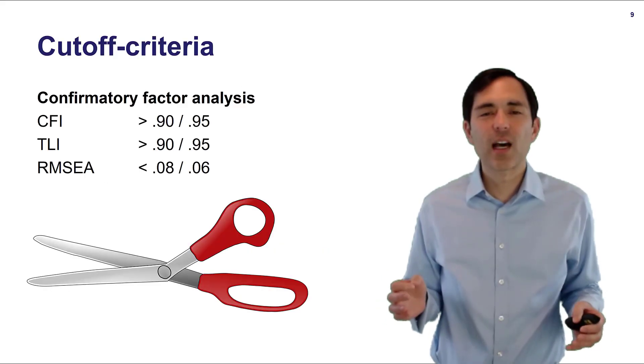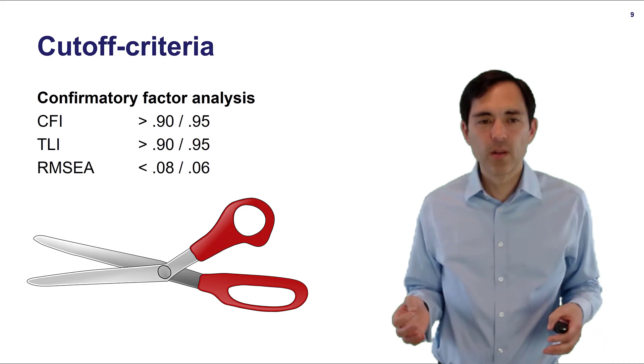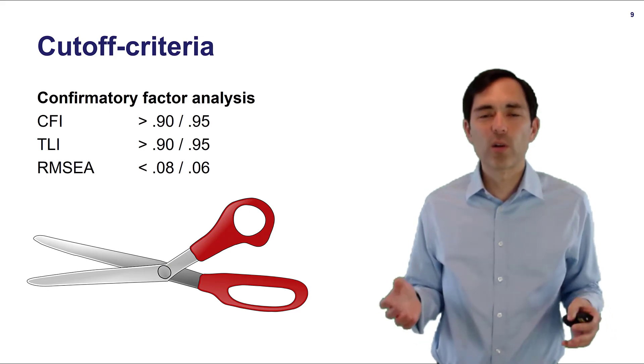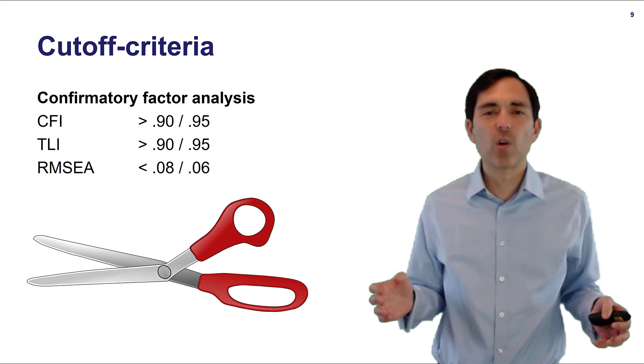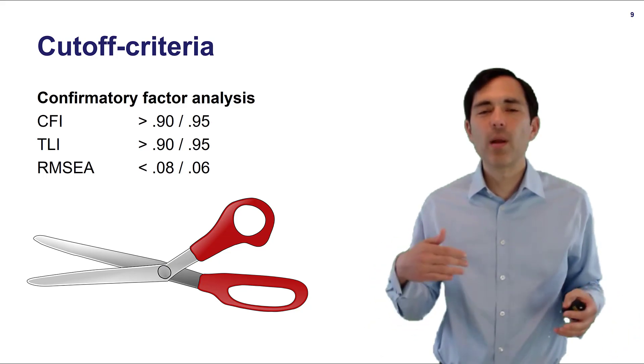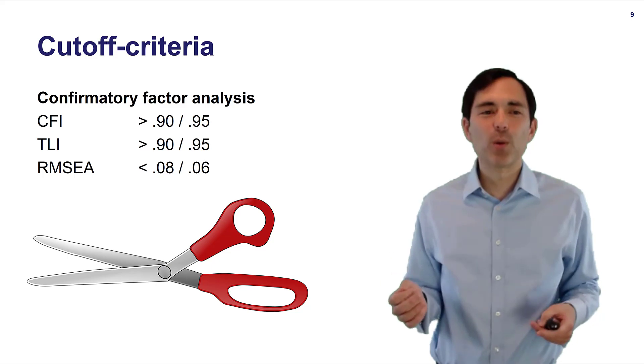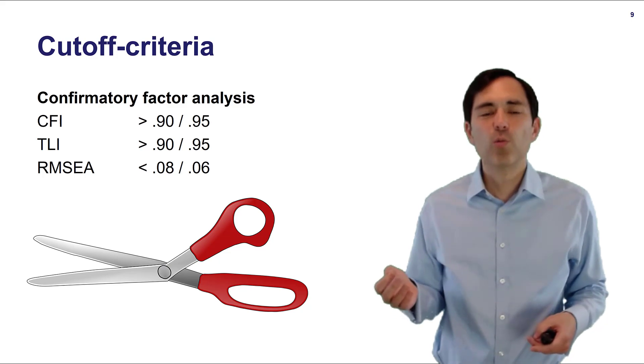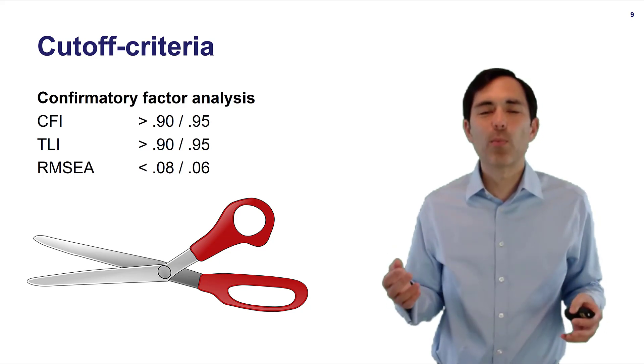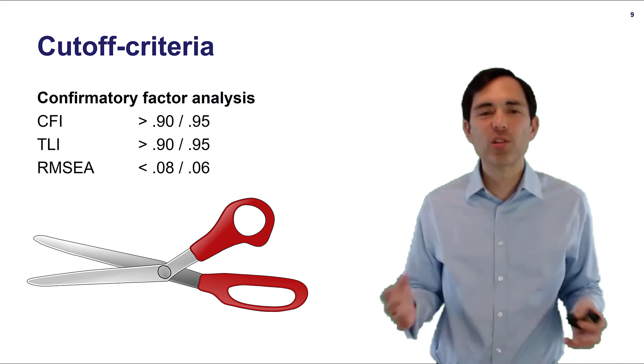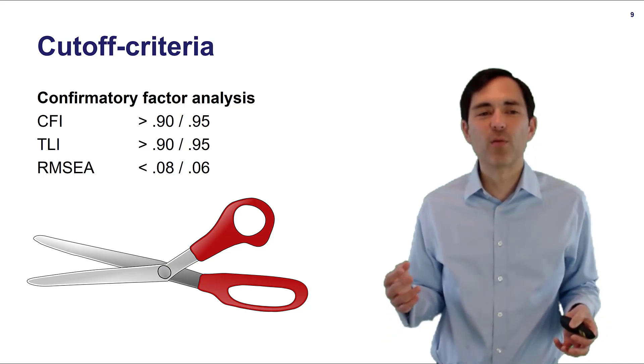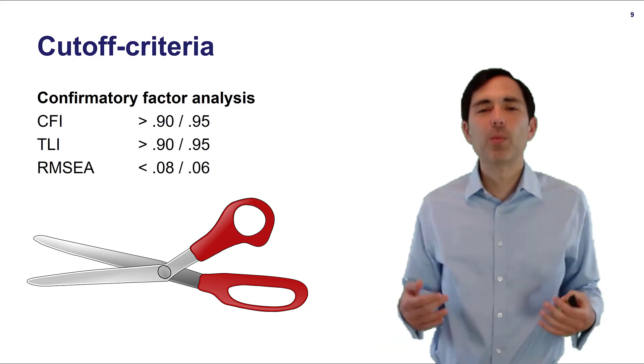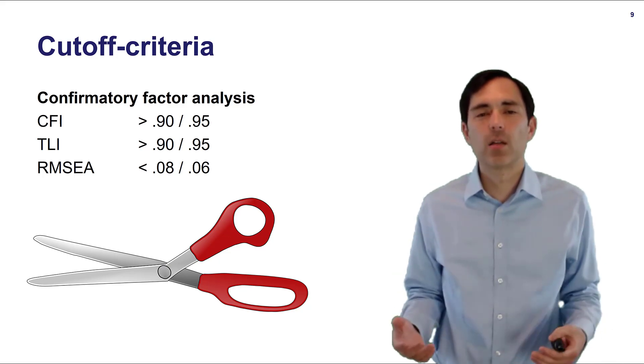There are some very rough cut-off criteria that have been proposed. Here I've listed some of the most important ones. In addition of course you would always report chi-square degrees of freedom and then many other criteria but the most common ones would be probably CFI and TLI. So these indicators we would usually say they should be at least 0.9 or higher. That would be the loose criteria. The more stricter one would be higher than 0.95 and then we have our RMSEA and it should be below 0.08 or below 0.06 if we use the more stricter number.